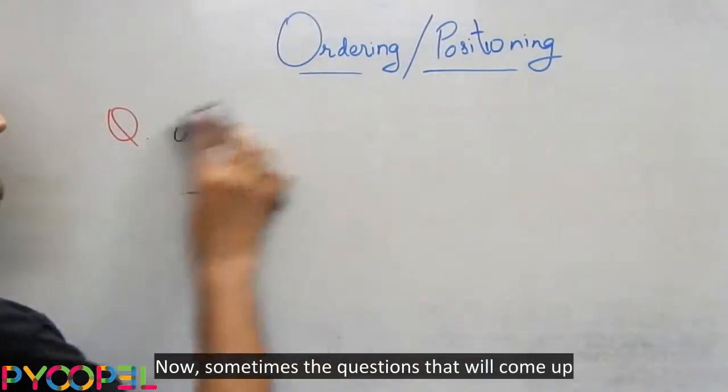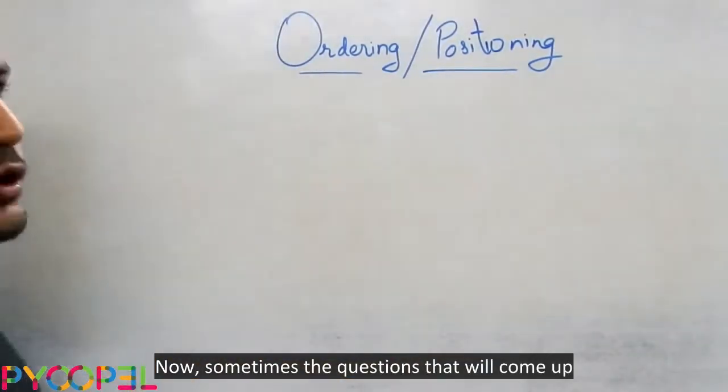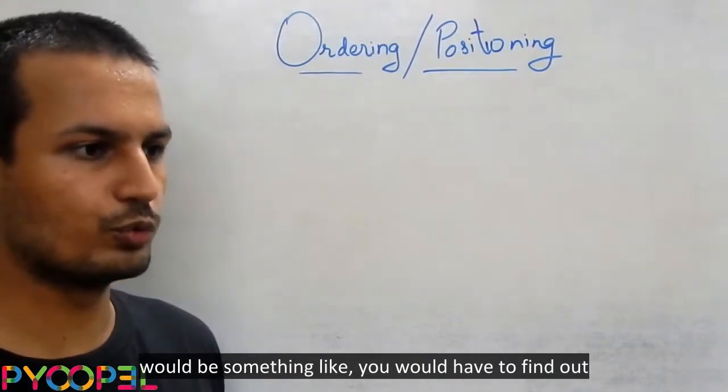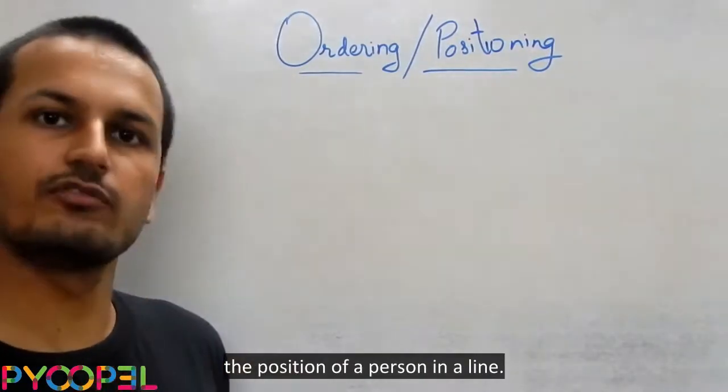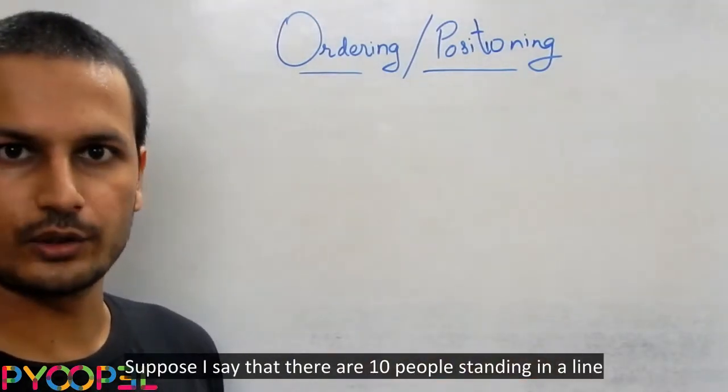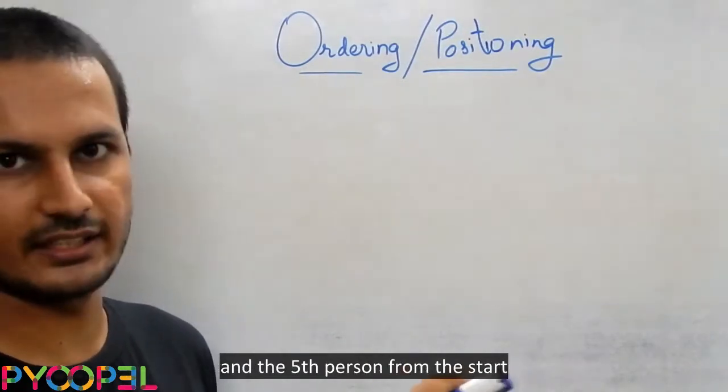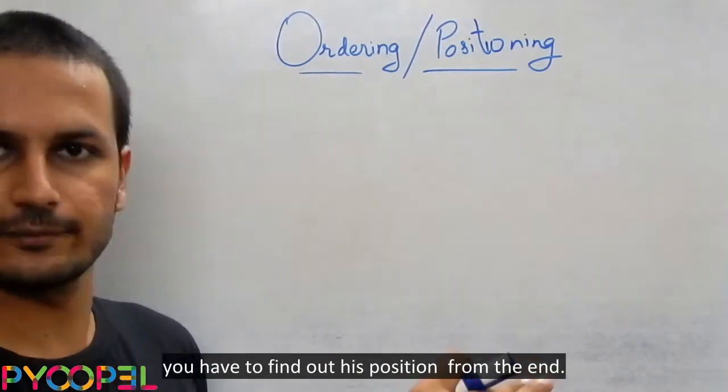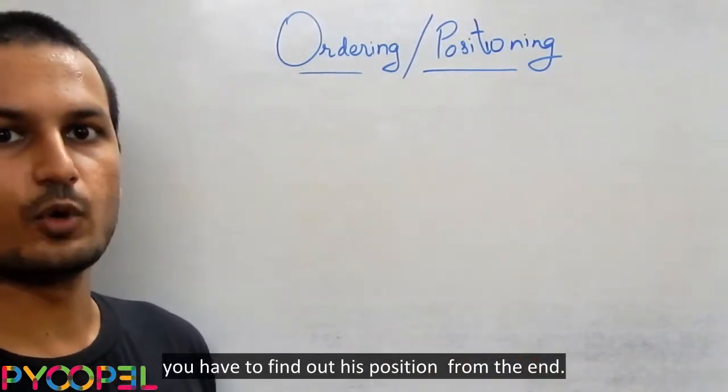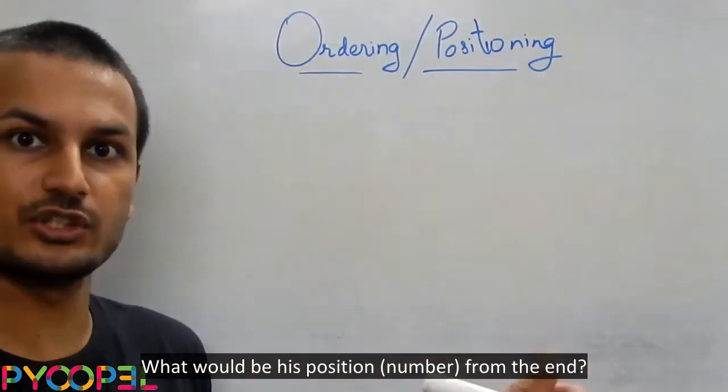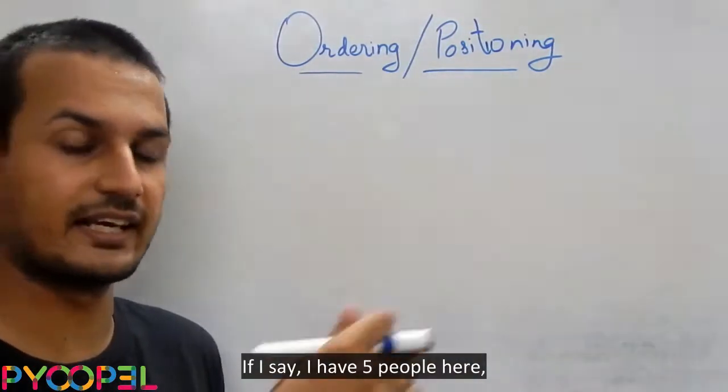Now sometimes the questions that will come up would be something like you'll have to find out the position of a person in a line. Suppose I say that there are 10 people standing in a line, and the fifth person from the start, you have to find out his position from the end. What would be his position from the end, what would be his number from the end.